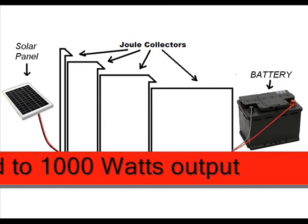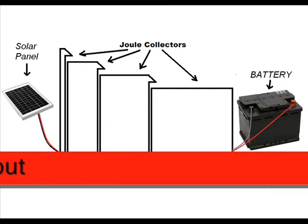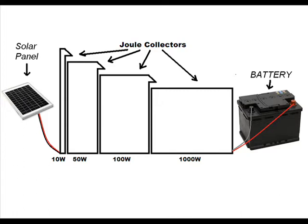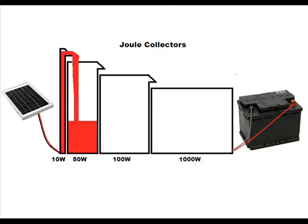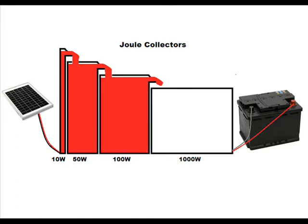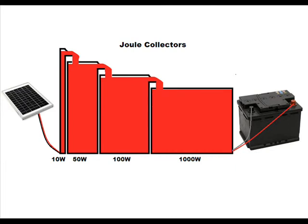The energy is fed up to the gel collectors. The energy released by the 10-watt solar panel is collected by the first gel collector. The second gel collector harvests the energy of the first, which is 5 times stronger. The third gel collector, which is 10 times stronger, grabs the energy of the second, and the fourth gel collector is 100 times power strength. It takes all the energy from the third gel and delivers it to the battery.